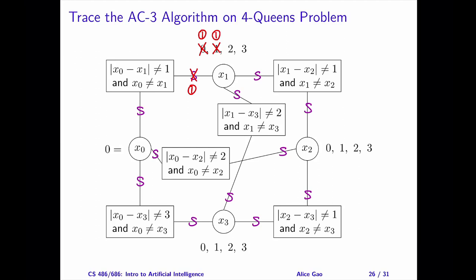Step 2. Let's remove the arc between x0 and x2, where x2 is the primary variable. If x2 is 0, x0 equals 0 violates a row constraint. If x2 is 1, x0 equals 0 satisfies both the row and diagonal constraints. If x2 is 2, x0 equals 0 violates a diagonal constraint. Therefore, the arc is not consistent, and we need to remove 0 and 2 from the domain of x2.